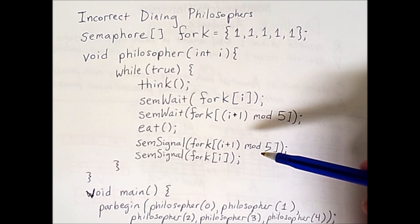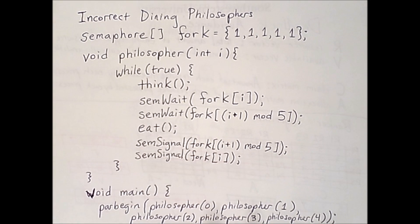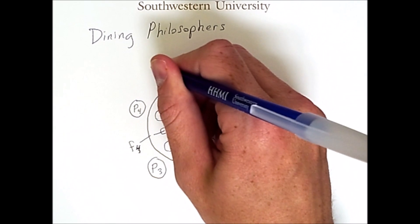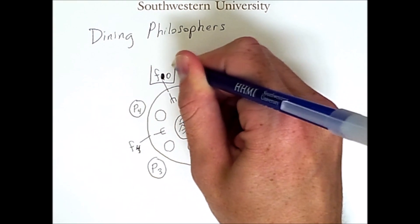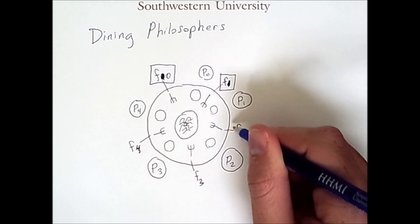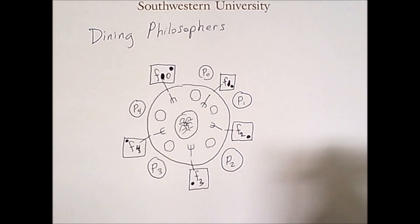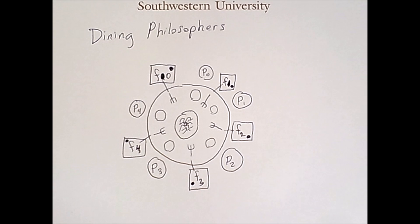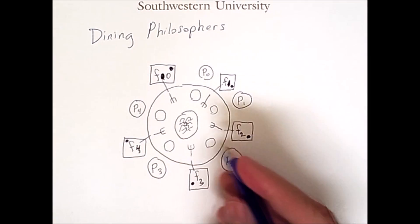How can this lead to deadlock? Let's draw a resource allocation diagram to see. If we simply keep these philosophers as circles and then put each of these forks in a little box, then we can draw the diagram itself around this table. Because each fork is a semaphore with an initial value of 1, there is only one dot inside each of these fork resources. Let's say that we have these five philosophers executing at the same time, and remember that they always grab the fork on their right first. In other words, they grab the fork that has the same subscript number.